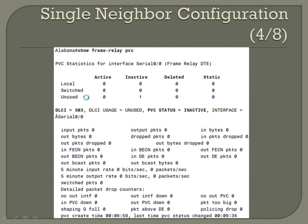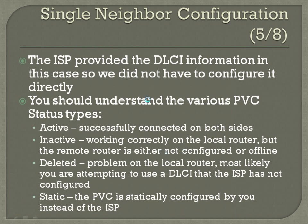Right now we've got one PVC listed as inactive — that's DLCI 503, also showing as inactive. The four PVC status options are: active, inactive, deleted, and static. The ISP provides the DLCI information, so in this example we did not have to configure it directly. In some other examples we will do direct DLCI configuration, but here the ISP is handling that portion.